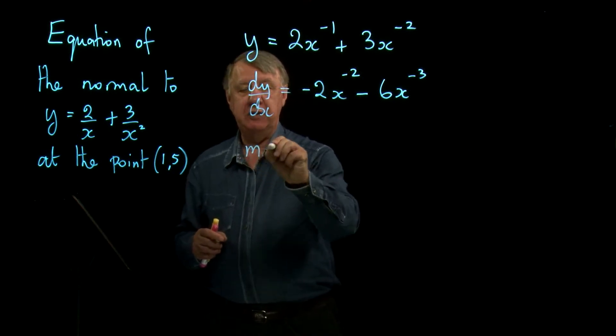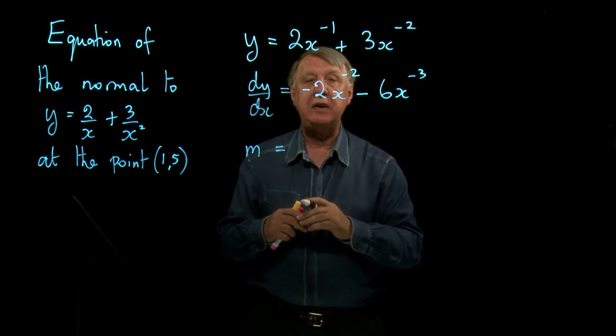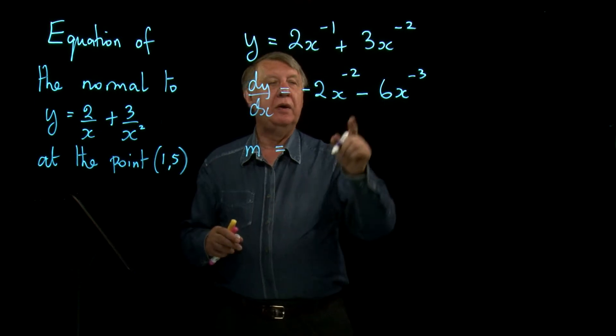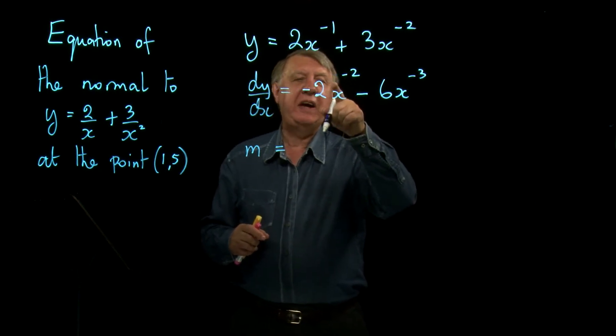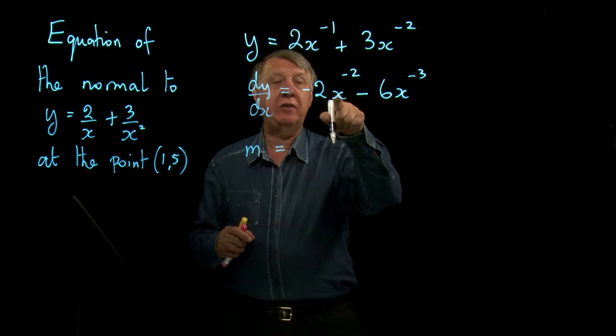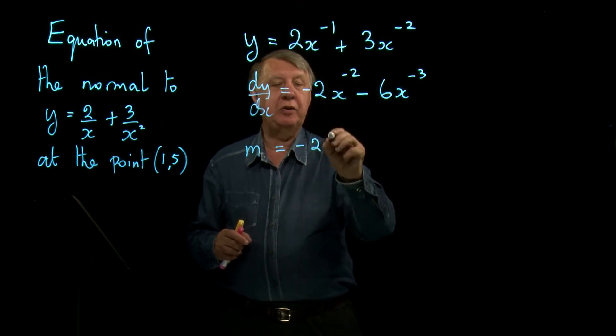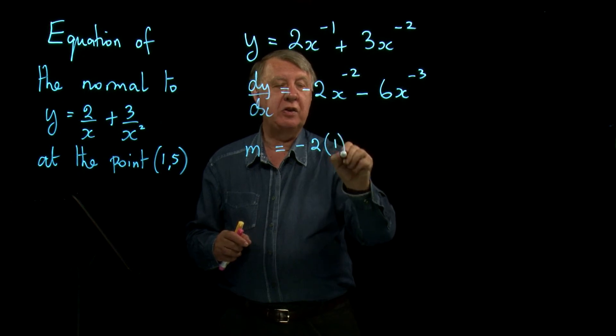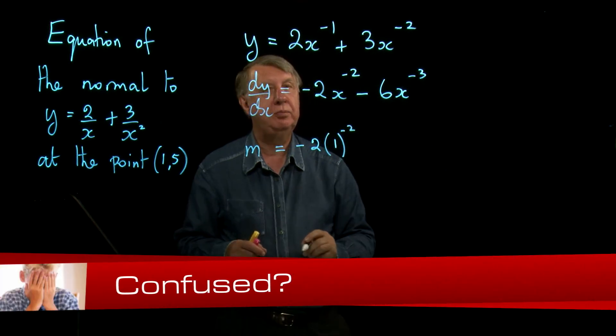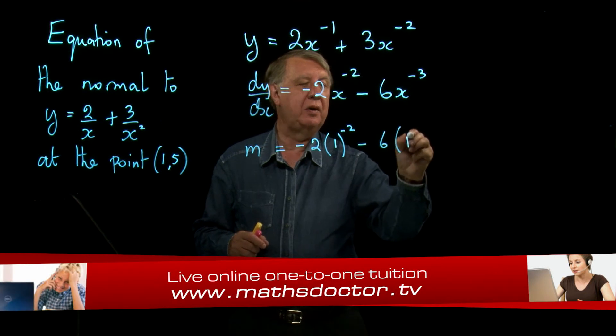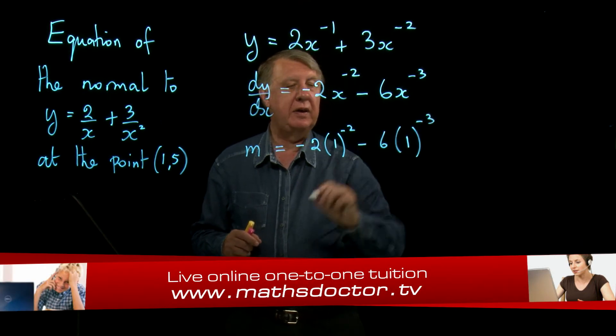So let's call it m because now I'm finding the gradient at that point. x is 1. Now, be careful here because it's x that's 1 and so that's really negative 2 times 1 to the power negative 2. Take away 6 times 1 to the power negative 3.